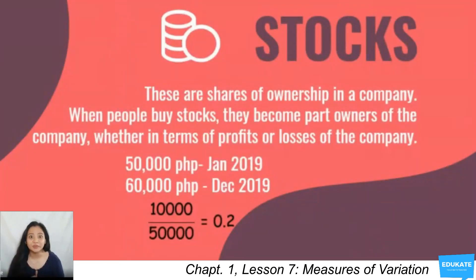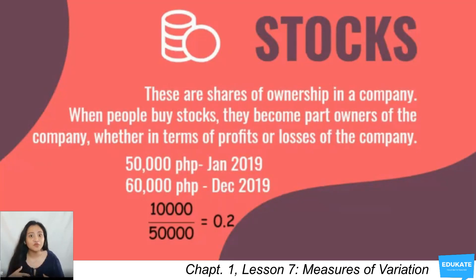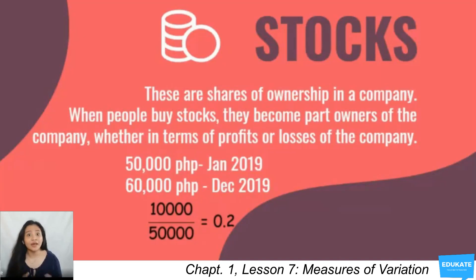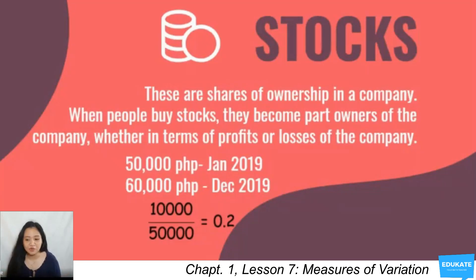We have the word 'stocks,' which are shares or ownership in a company. When people buy stocks, they become part owners of the company, sharing in its profits or losses. The history of performance of a particular stock may be a useful guide to what may be expected in the foreseeable future. For example, if the parents of Juana de la Cruz invest 50,000 pesos in a stock at the beginning of the year and the value goes up to 60,000 pesos — an increase of 10,000 pesos.